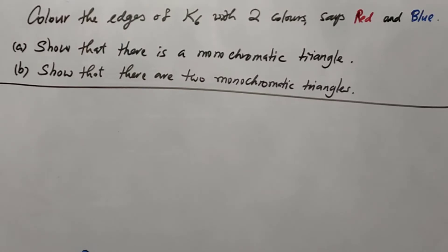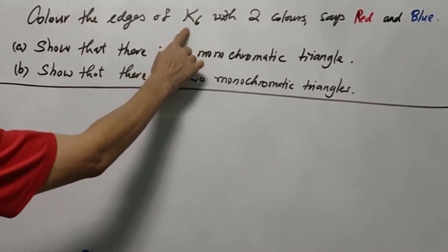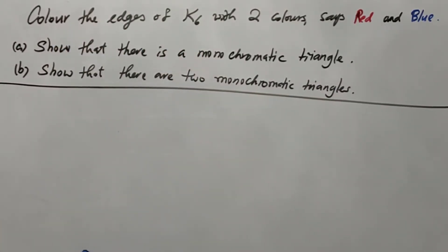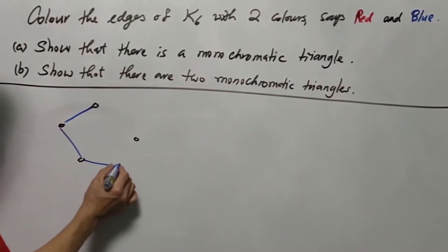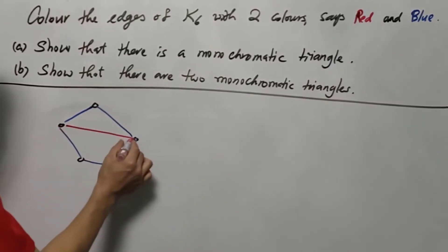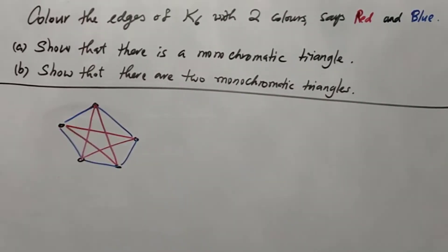For question one, we will say that six vertices is the least number of vertices such that A is correct. Because if you have five vertices, it is not sufficient. We can color the edges using blue in this case and red in this case. We don't see any red triangle or blue triangle.